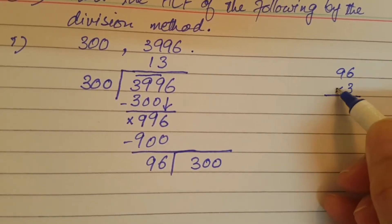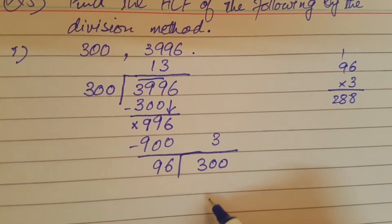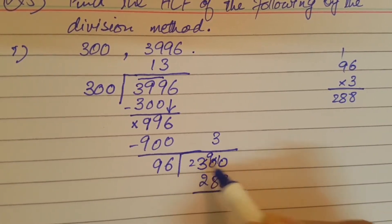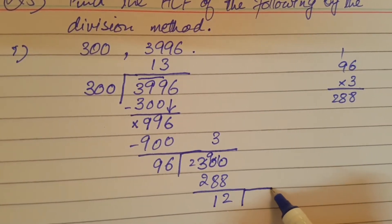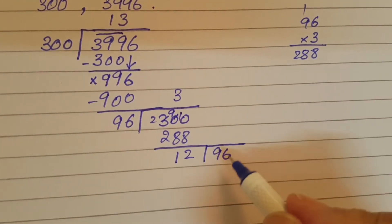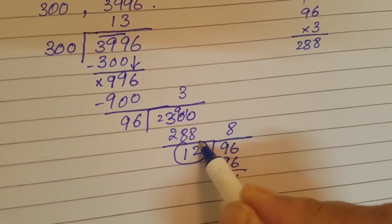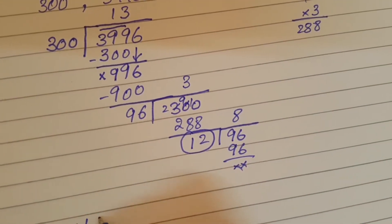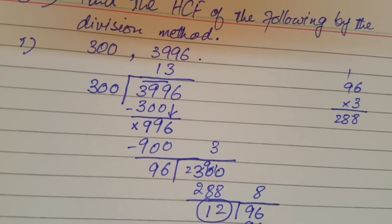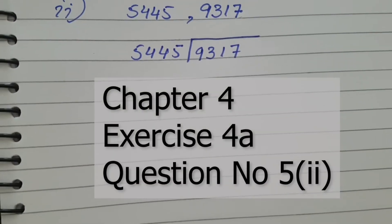Let's do the multiplication: 3 times 96 is 288. After subtraction we get 12. Now 96 becomes the dividend and 12 is the divisor — 8 times 12 is 96, leaving remainder zero. The last divisor is your highest common factor. So 12 is the HCF for this question. By the long division method we can find the HCF of different numbers like this.